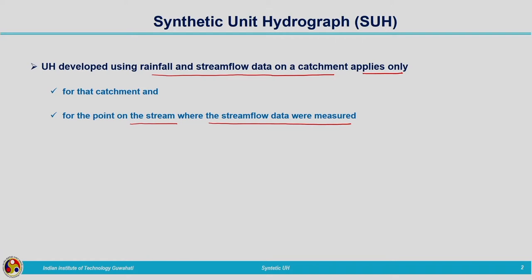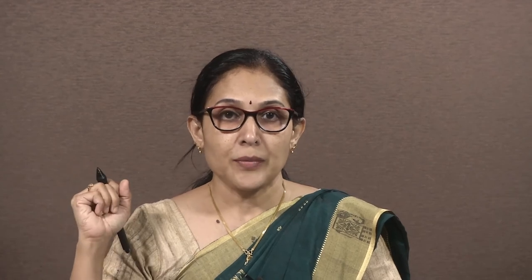While developing the unit hydrograph, we need to have effective rainfall of a particular duration and also corresponding stream flow from the gauging station. So the unit hydrograph derived this way will be applicable to that particular location only. In majority of cases we won't be having stream flow data for all locations. Sometimes the entire catchment will be ungauged, so we consider data from a neighboring station which is hydrologically and climatically similar.